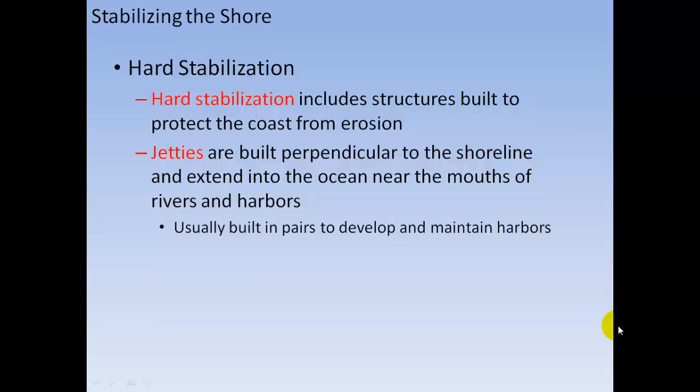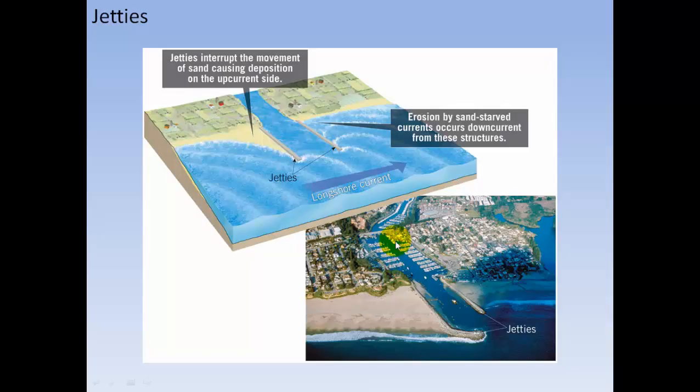Hard stabilization includes engineering structures built to protect the coast from erosion. Jetties are built perpendicular to the shoreline, extended into the ocean near the mouths of rivers and harbors, usually built in pairs to develop and maintain harbors. Here is a harbor with two jetties to trap sand and keep the harbor open.